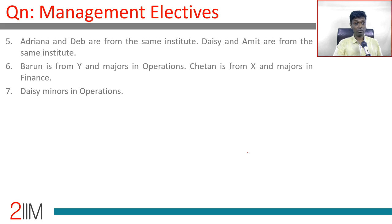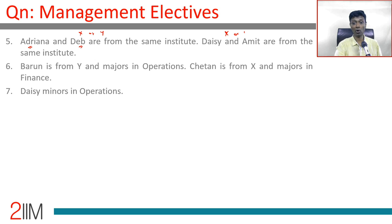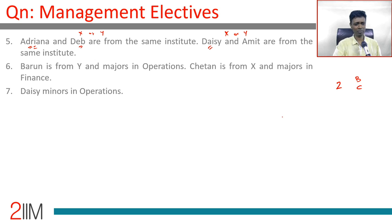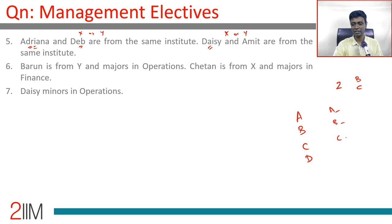Adriana and Deb are from the same institute — since both have been accounted for among paired students, that means X or Y, not Z. Similarly, Chetan and Amit are from the same institute, again X or Y. That means the girls not yet placed — Bandita and Chitra — are the two females in Z. I'll label females as A, B, C, D and males with a dash notation to keep them distinct.